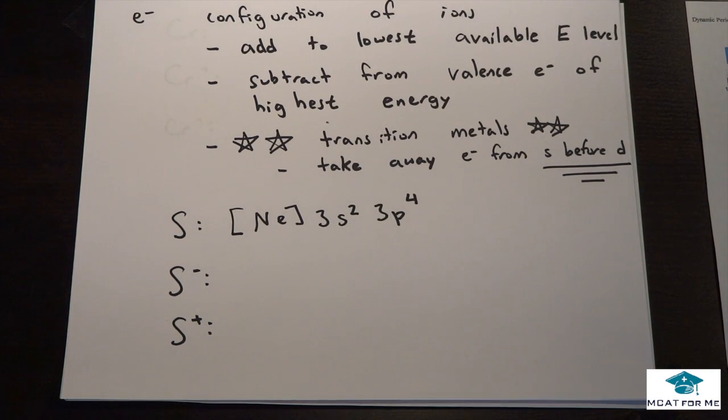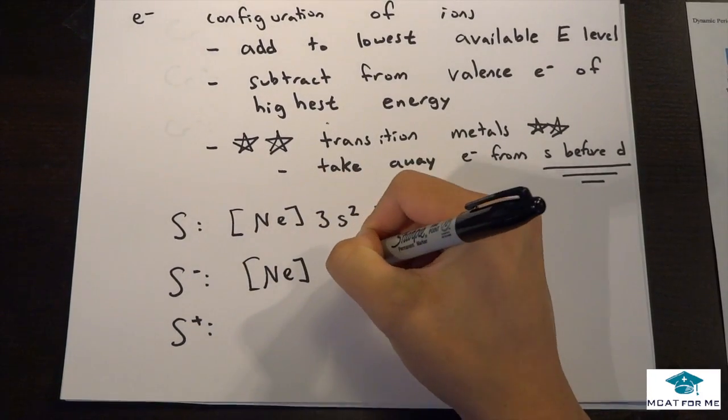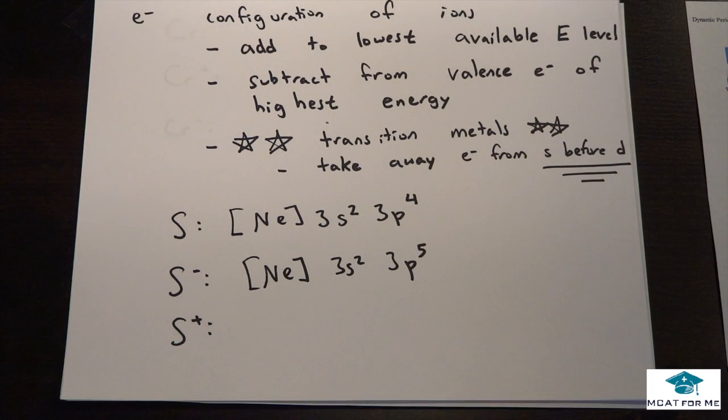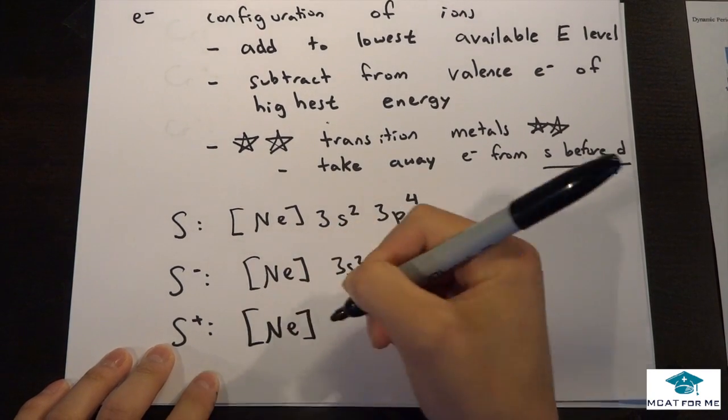So S⁻ means it has more electrons than protons, so we added an electron. We just add it to the highest energy level that's available. And S⁺, when we're subtracting, we're going to want to subtract from the highest energy level.